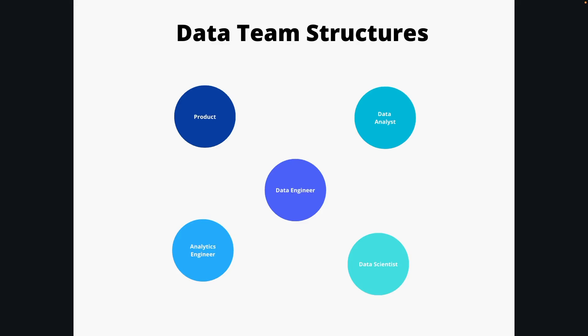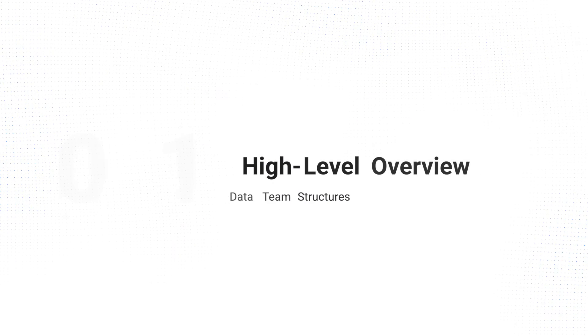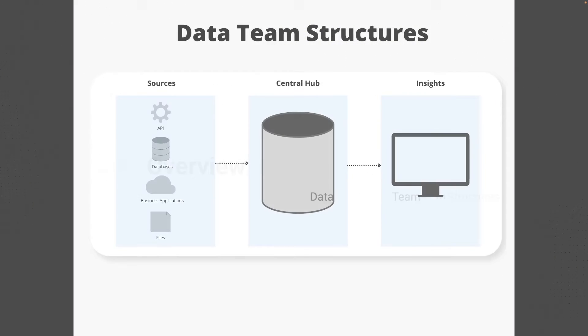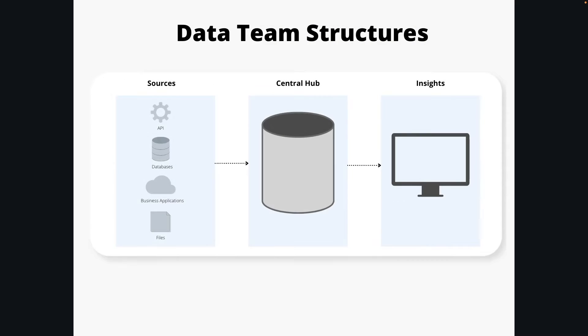In this video, I want to briefly cover some common structures of data teams, including not just people on the data engineering side itself, but those that operate around it, so that you can have a better understanding of common overall structures, or if you're trying to start your own team, how you can think about possibly aligning things. This isn't going to be super deep — it's just a high-level overview with some visuals.